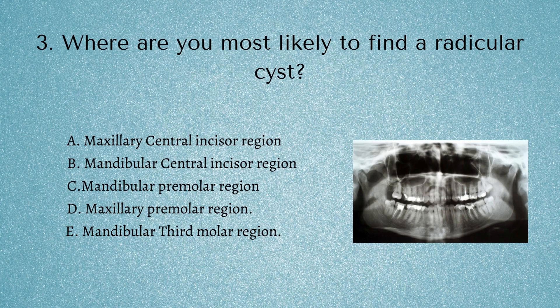Question 3: Where are you most likely to find a radicular cyst? Is it A) the maxillary central incisor region, B) the mandibular central incisor region, C) the mandibular premolar region, D) the maxillary premolar region, or E) the mandibular third molar region? This is one of those questions where you either know it or you don't. The correct answer is the maxillary central incisor region. It's really important to know the different types of cysts, where they are most commonly, and what they're associated with — for example, a dentigerous cyst is associated with an unerupted tooth, and a radicular cyst with a non-vital tooth. Those are very common questions on the MFDS exam.